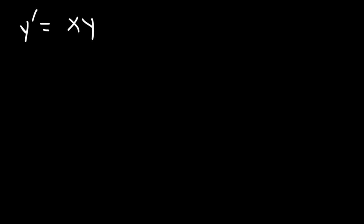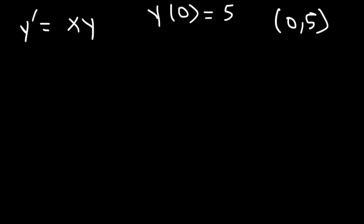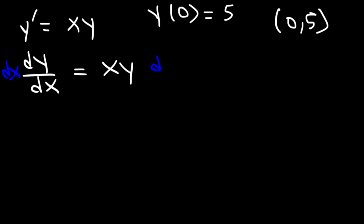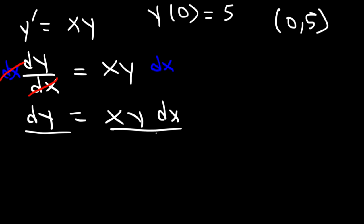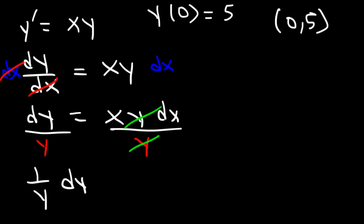Let's say that y prime is equal to x times y. Go ahead and pause the video and see if you can get this answer. The initial condition is y of 0 is equal to 5, which you can also view as the point (0, 5) — x is 0 and y is 5. y prime is the same as dy over dx. We need to separate x and y, so let's begin by multiplying both sides by dx. Therefore, dy is equal to x·y·dx. Now let's divide both sides by y. So on the left we have 1 over y dy, and this is equal to x dx.